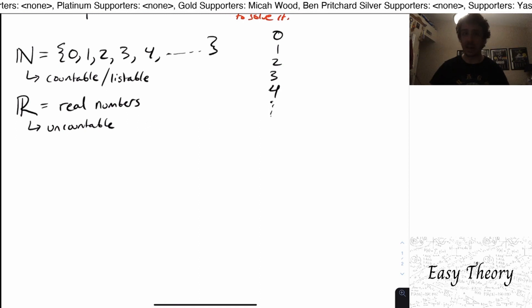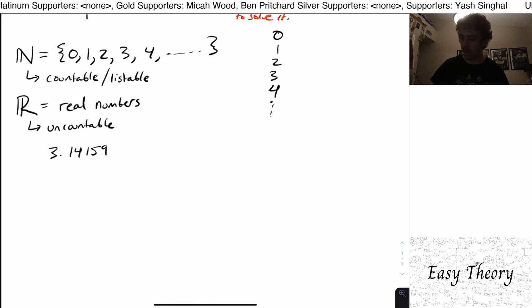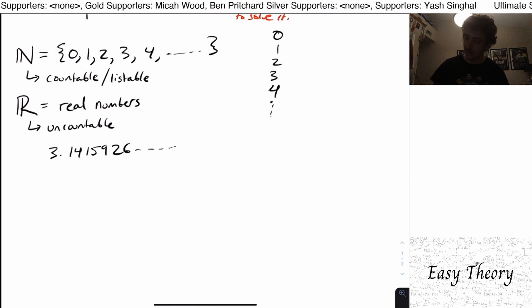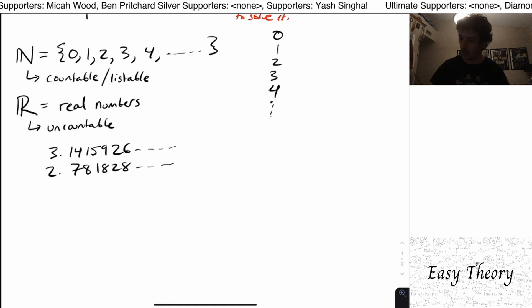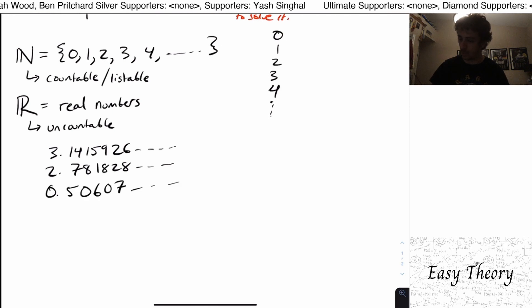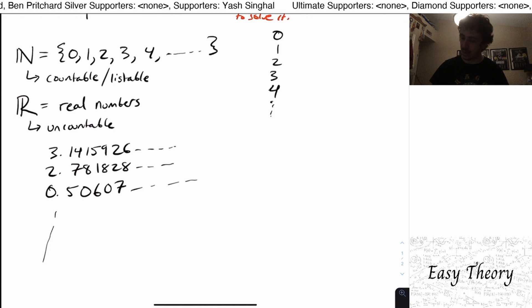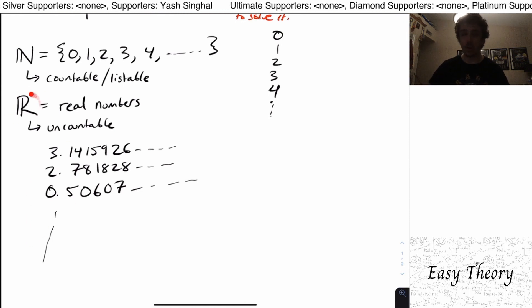So let's just say I did have such a list. So maybe like 3.1415926. And then maybe 2.781828. Just some random numbers obviously. 0.506, 0.607 blah blah blah etc. And let's just suppose that this is a list that has every real number on it.